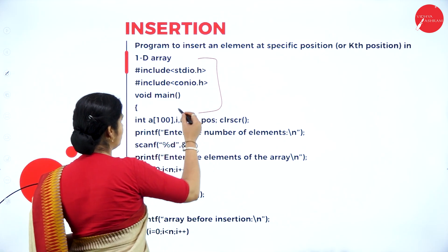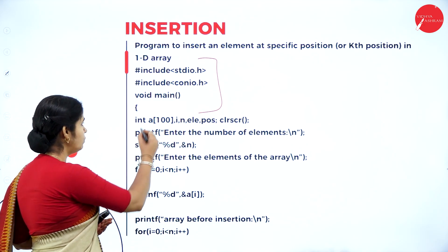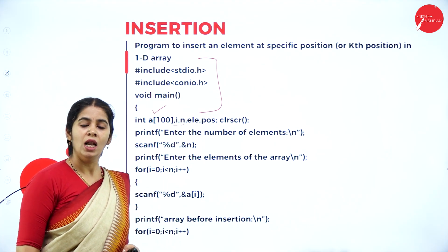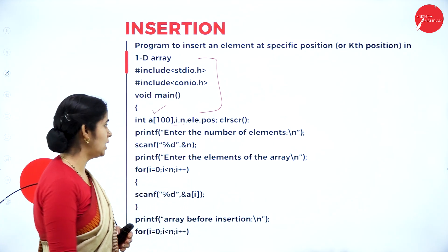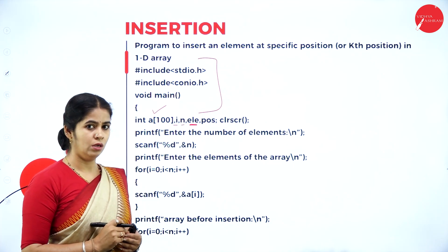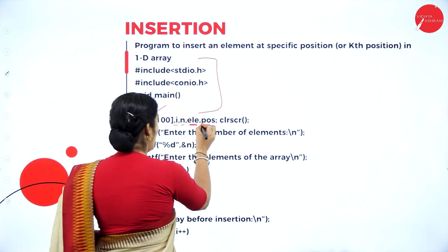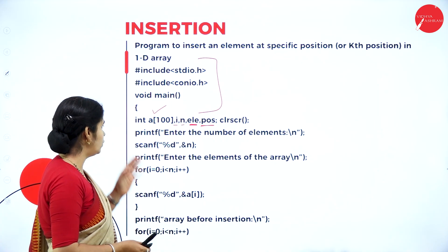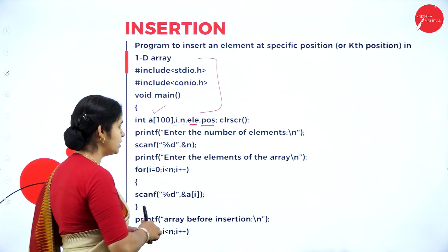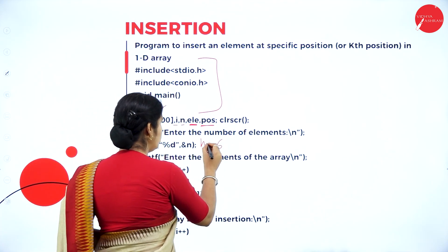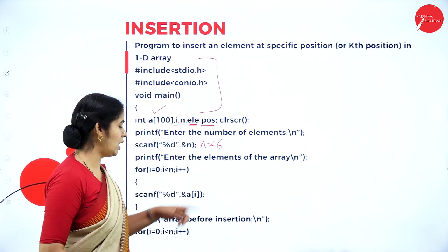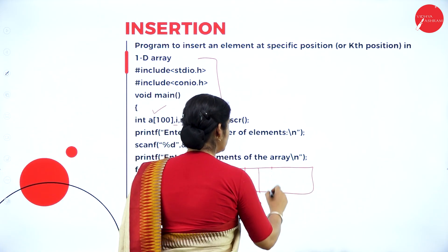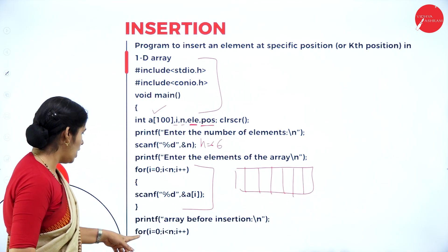Let us look at the C code for insertion. The variables declared are: the array, i, n for the length of the array, a variable to hold the element to insert, and position for the index where we want to insert. We print 'enter the number of elements' — say n equals 6 — then read 6 values into the array using a for loop with scanf.